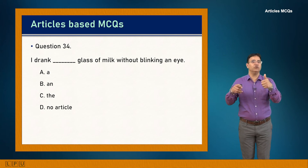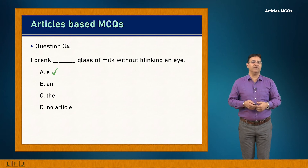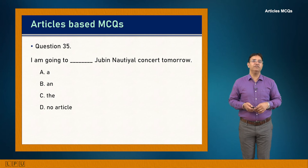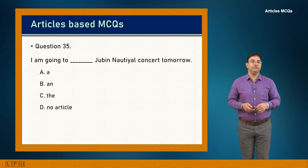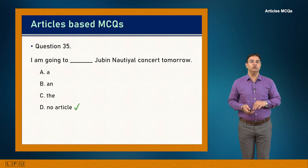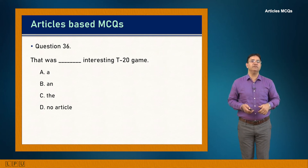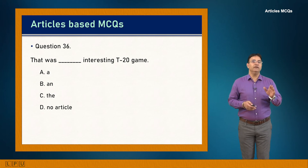Question 34: I drank dash glass of milk without blinking an eye. One unspecified glass of milk — answer is A: 'I drank a glass of milk without blinking an eye.' Question 35: I'm going to dash Juvenile concert tomorrow. It's a name, so no article is needed. Answer is D: 'I'm going to Juvenile concert tomorrow.'